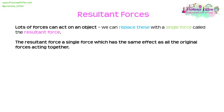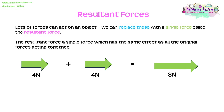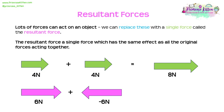Lots of forces can act on an object. However, we can replace all of these with a single force called the resultant force — a single force that has the same effect as all the original forces acting together. For example, a 4 newton force plus another 4 newton force in the same direction gives a resultant of 8 newtons. However, a 6 newton force encountering a 6 newton force in the opposing direction gives a resultant force of zero, as they cancel out.